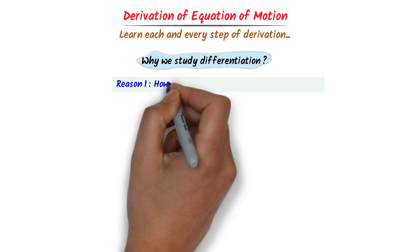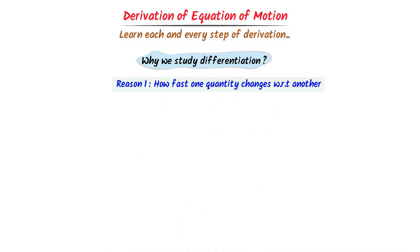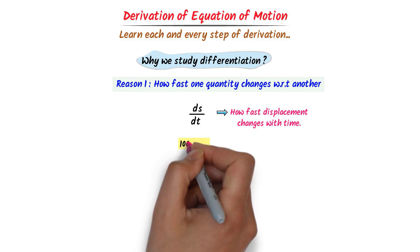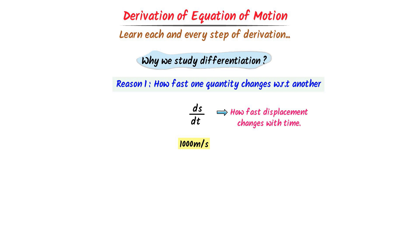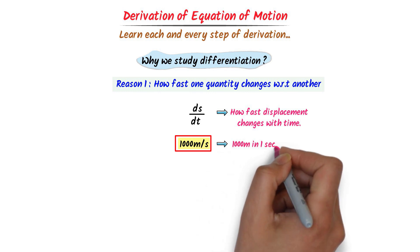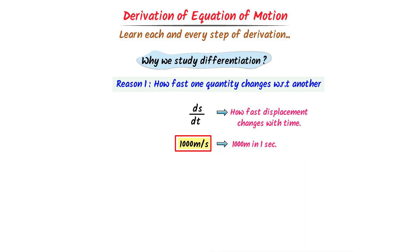Firstly, to check how fast one physical quantity changes with respect to another. For example, consider displacement and time — we differentiate displacement with respect to time in order to check how fast displacement changes with time. For instance, we say one thousand meters per second; from this value we know that displacement changes one thousand meters every second.